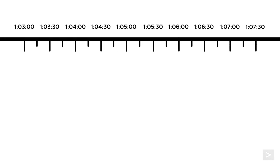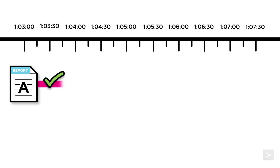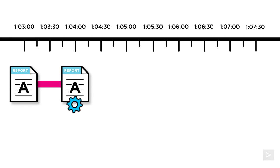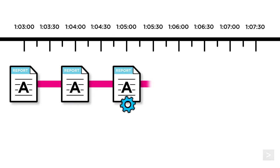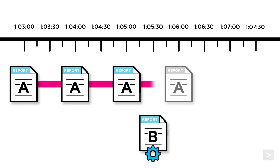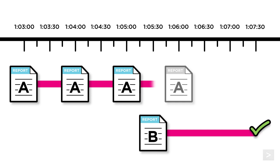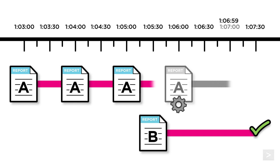Let's take a look at what would happen if we ran into our concurrent search limit. Report A runs every minute and takes 30 seconds to complete. We see the scheduler runs Report A for the 1:04 to 1:05 period and schedules it to run again at 1:06. Report B runs every 5 minutes and takes 2 minutes to complete. If the scheduler runs Report B at 1:05:30 and it takes 2 minutes to run, Report B will not finish until 1:07:30. The scheduler would attempt to run Report A, but it cannot because Report B is still in progress. It continues to attempt to run Report A until 1:06:59. At this point, what happens next depends on whether Report A is using real-time or continuous scheduling.